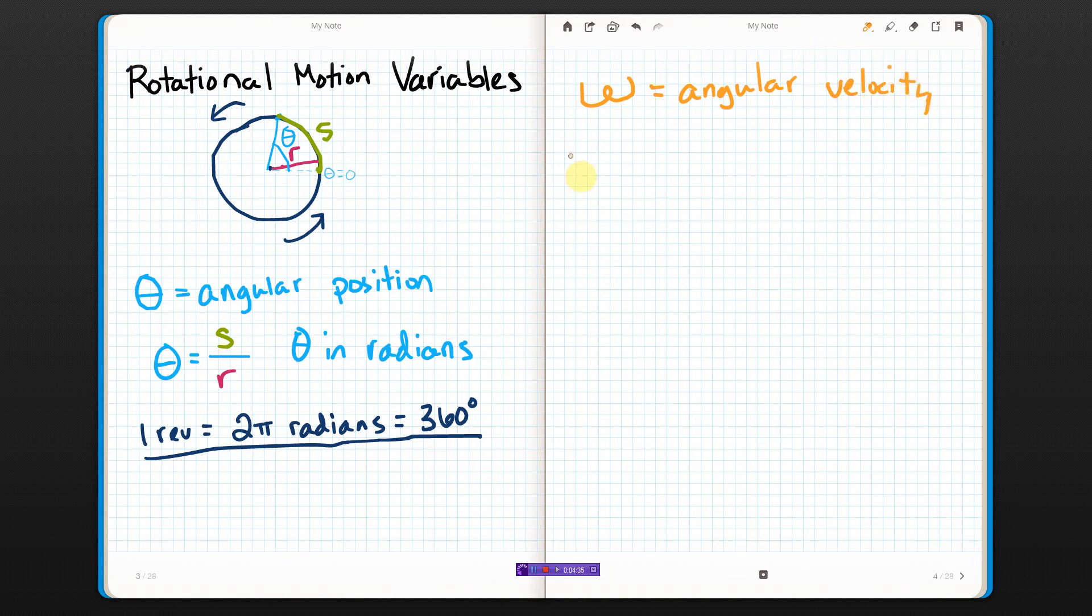If you want the average angular velocity, that would be the change of your angular position divided by how much time it took. Or if you want your angular velocity at any given point, then that is the derivative of angular position, just like velocity was the derivative of position.